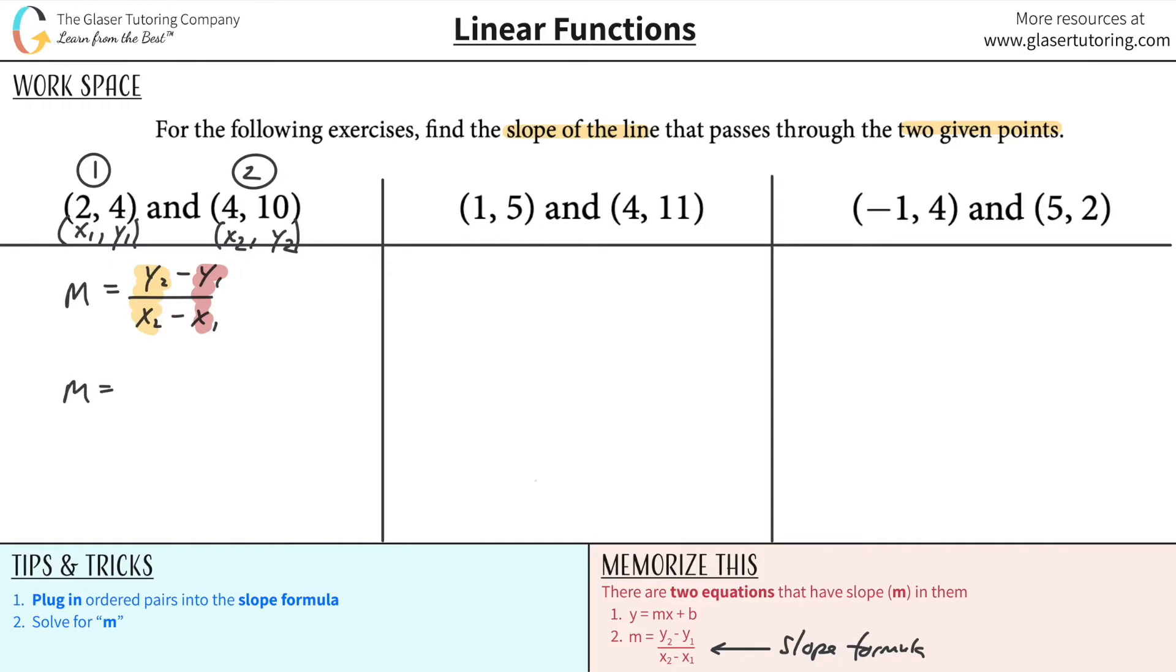So what's the y2 value? 10, right? Right here. What's the y1 value? 4. What's the x2 value? 4. What's the x1 value? 2. Let's simplify this. 10 minus 4 is 6. 4 minus 2 is 2. 6 over 2 is going to be 3. And there is the slope, ladies and gentlemen. It is positive 3.